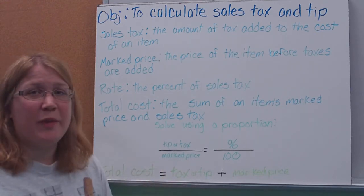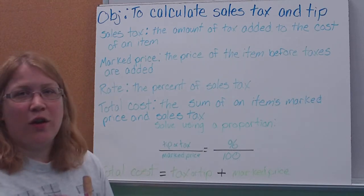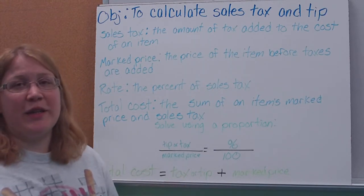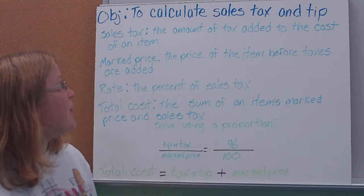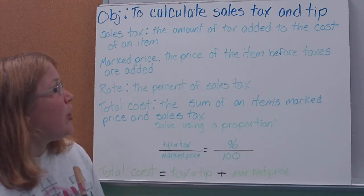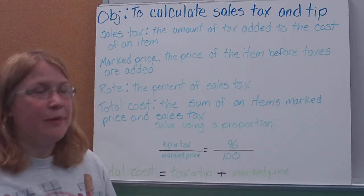So first, sales tax. You're probably familiar with that, it's the government's money, the amount of tax added to the cost of an item. When you go in and you buy an item and it says it's $9.99, you know you're really paying more because you've got a tax to pay with it. Marked price refers to the price of the item before the tax, that would be the $9.99 item.